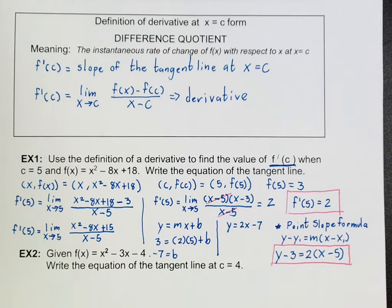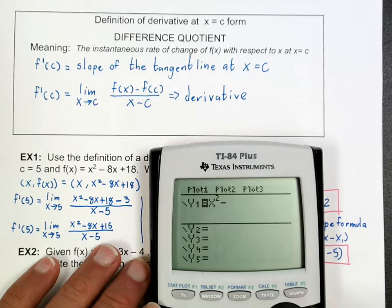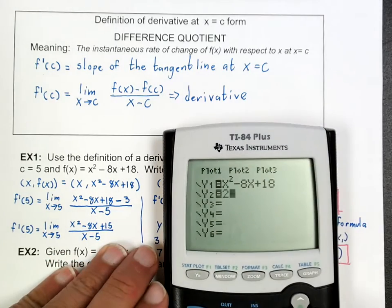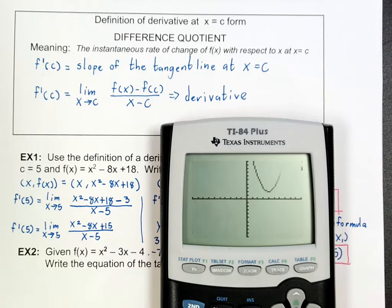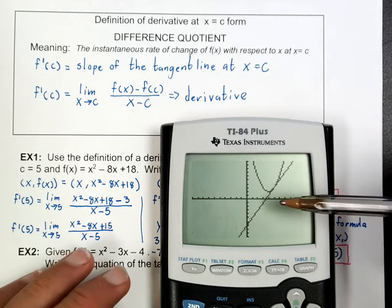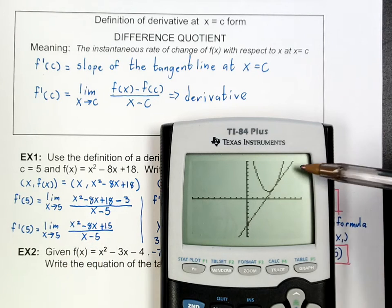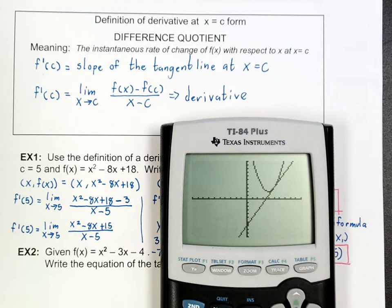Let me graph something to verify. I'll put the original function x²-8x+18, and on y₂ I'll put the equation of the line I found: 2x-7. If I did it correctly, this parabola will have a tangent line right at about x equal to 5. This is a good way to check your work — if the line is crossing through two points or not touching at x equal to 5, then something went wrong.